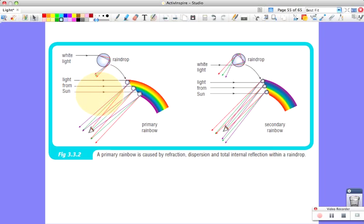In a primary rainbow, the first rainbow you see, you're looking through a number of drops of water and you see the rainbow going from red down to blue.